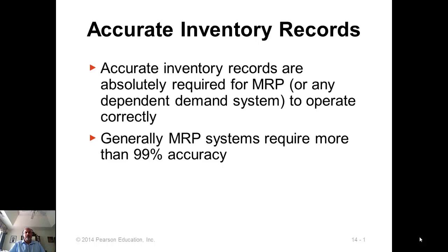Accurate inventory records are absolutely required for MRP, or any dependent demand items, to operate correctly. Generally, MRP systems require more than 99% accuracy, because even if there are small discrepancies, the computations are such that a lot of snowballing effects will occur, and you'll end up with plans that are not accurate and not useful.